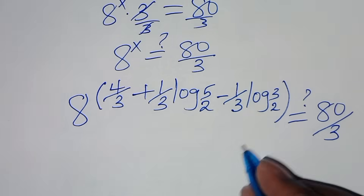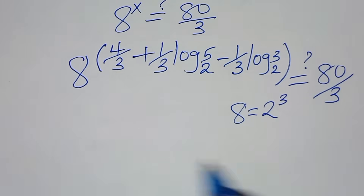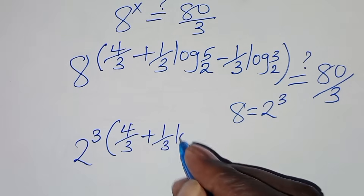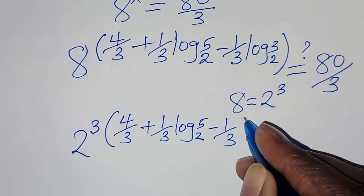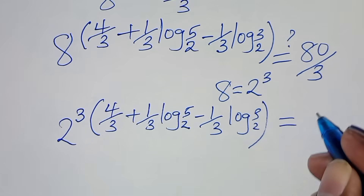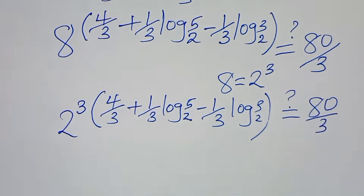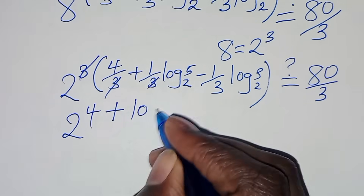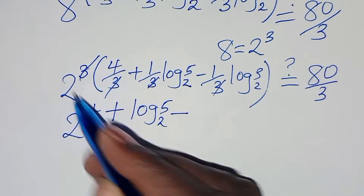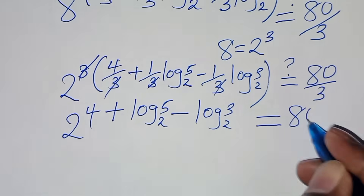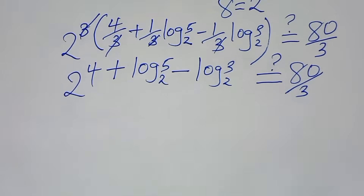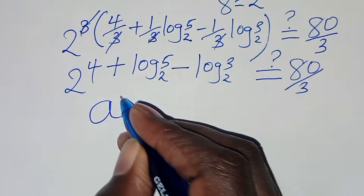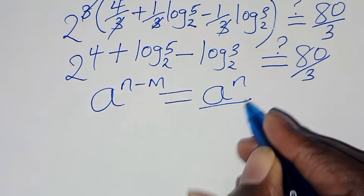Let's express 8 as 2^3, so we'll have 2^3 raised to the power [4/3 + (1/3)·log₂(5) − (1/3)·log₂(3)]. Simplifying, the 3s cancel, giving 2^4 plus log₂(5) subtract log₂(3). Applying the indices property — a^(n−m) equals a^n divided by a^m — we get 2^4 times 2^(log₂5) divided by 2^(log₂3), and this should equal 80 divided by 3.